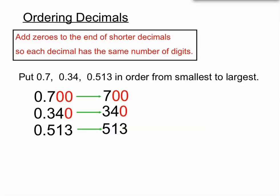So you can see that if we are just comparing those, what we have is 700, we have 340, and we have 513. So that allows us to see which one is the smallest, middle-sized, and the largest. The smallest one there is 340, the largest is 700, and the middle-sized one is 513.